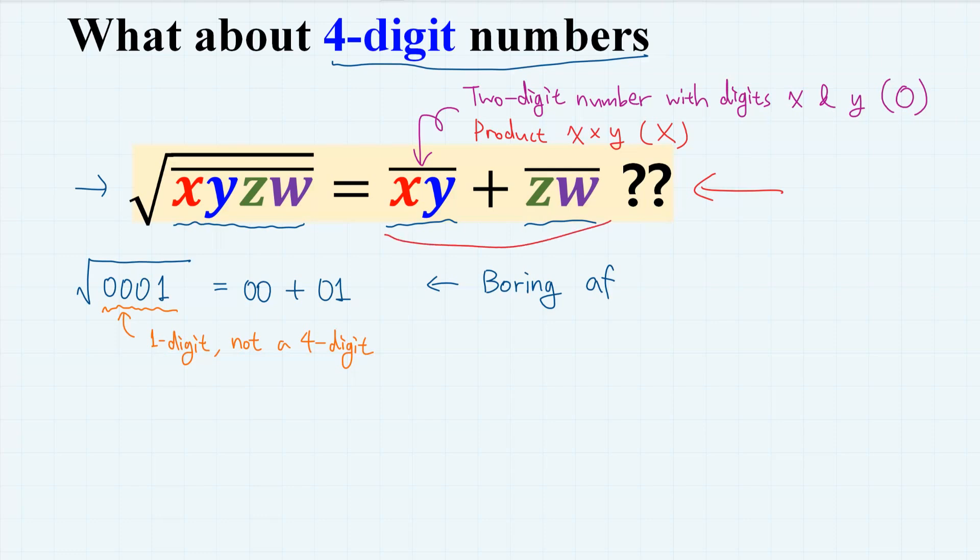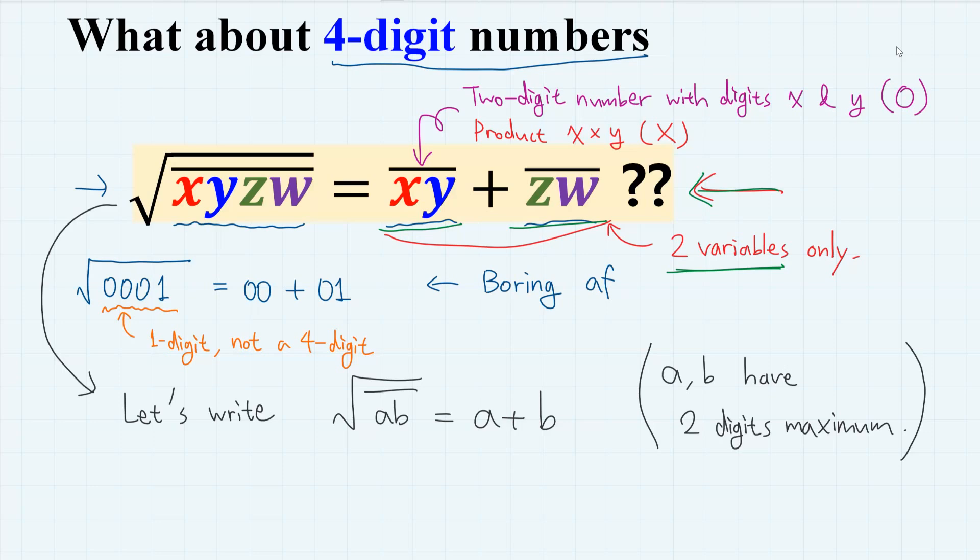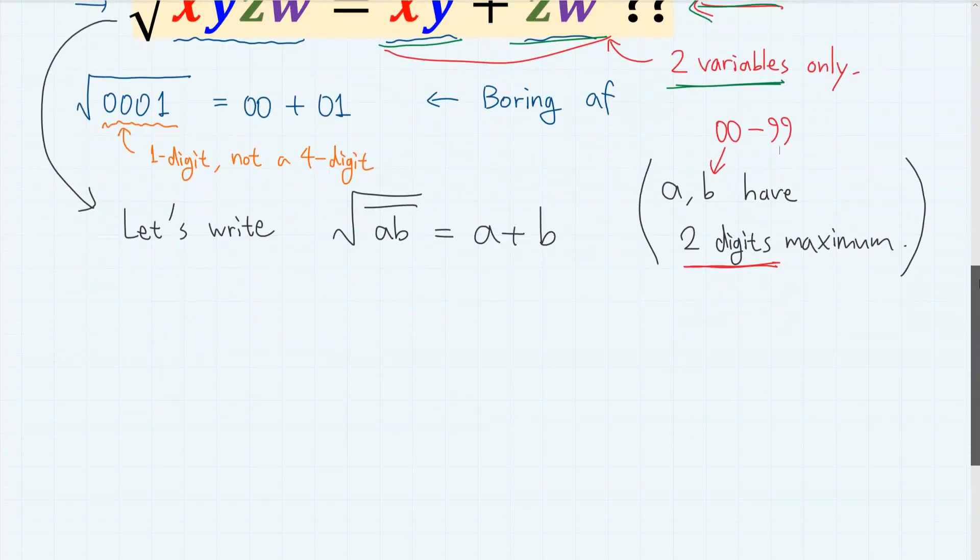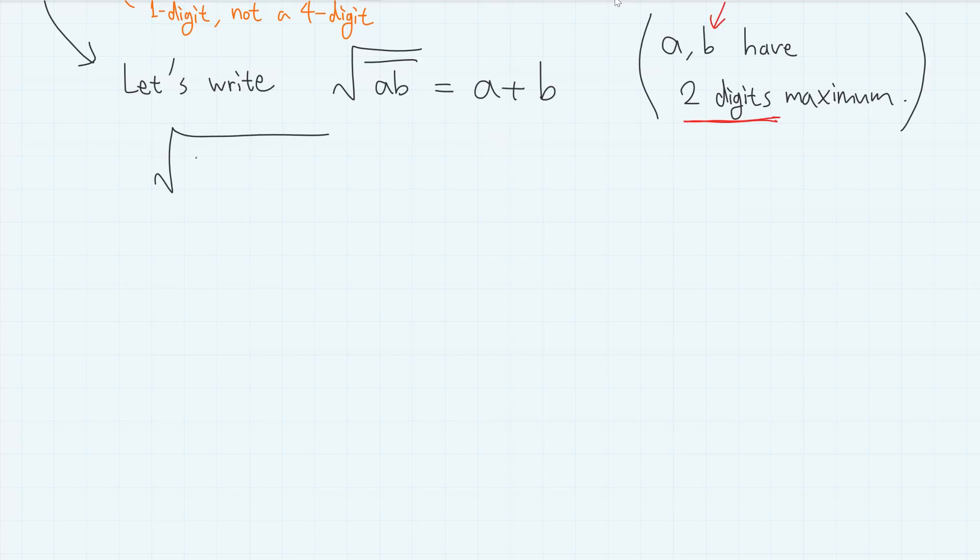The reason why I chose this pattern is that it still only requires two variables. Any other patterns involving three or more variables make the equations extremely complicated, and I don't think I will ever deal with them in the future. But for this one, since we have only split the numbers in two, we can write the equation using only two variables, such as square root of ab equals a plus b, where a and b now can have two digits maximum, from 00 to 99. Then we can write the number as 100a plus b. So square root of 100a plus b equals a plus b.